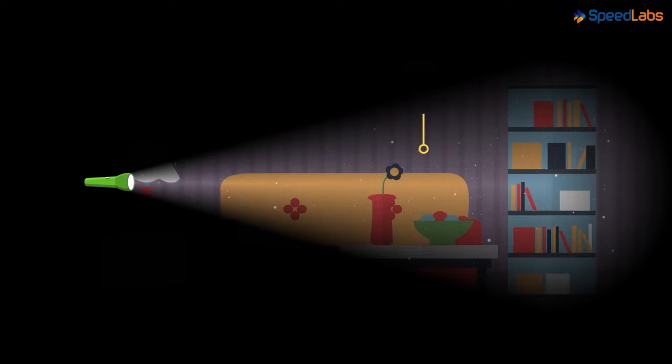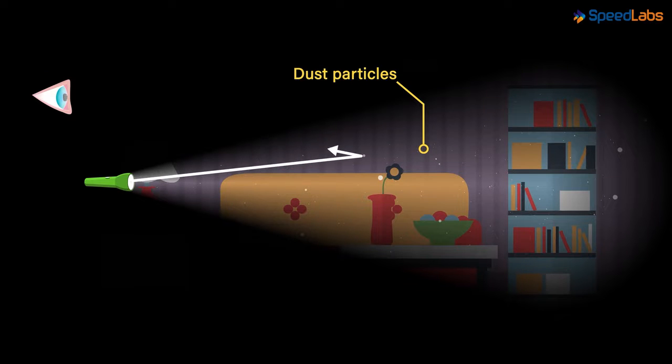You will see tiny dust particles in the air. What is the reason for this? Why are you able to see these particles? You are able to see the dust particles because the light from the torch is getting reflected from their surfaces and travelling towards our eyes.